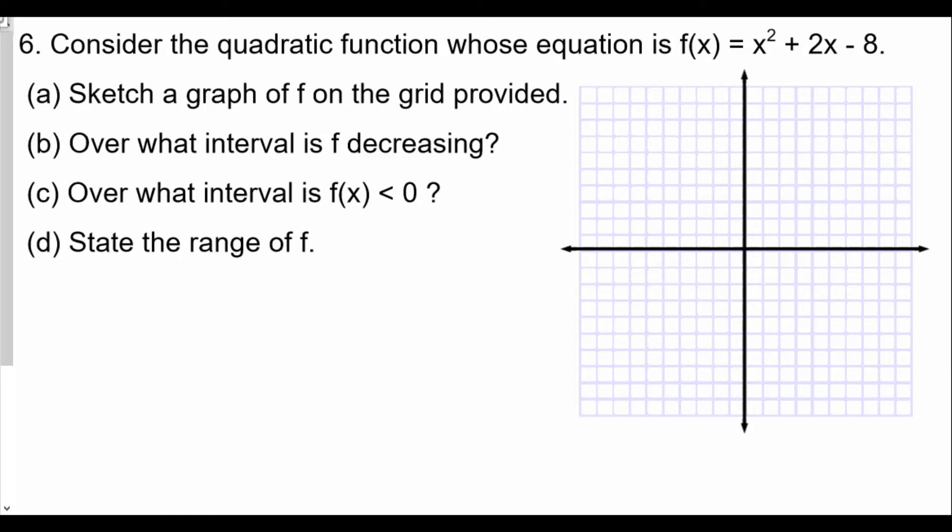Question number six. Consider the quadratic function whose equation is f(x) = x² + 2x - 8. Sketch a graph of f on the grid provided. Over what interval is f decreasing? Over what interval is f(x) less than zero? And state the range of f.